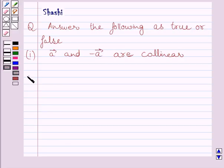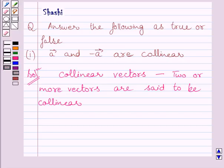Let us now start with the solution. First of all, let us define collinear vectors. Two or more vectors are said to be collinear if they are parallel to the same line irrespective of their magnitudes and directions.